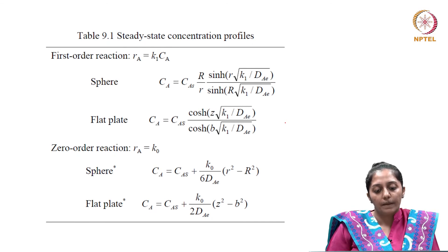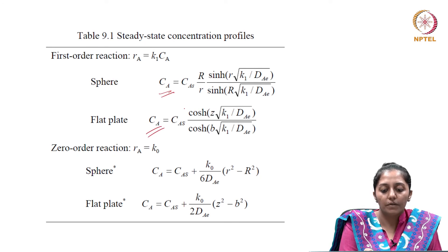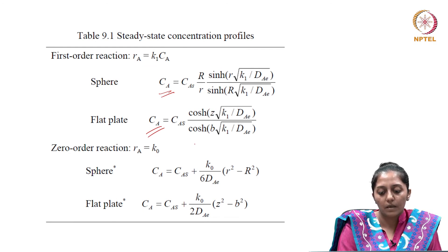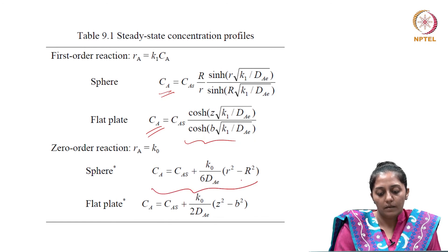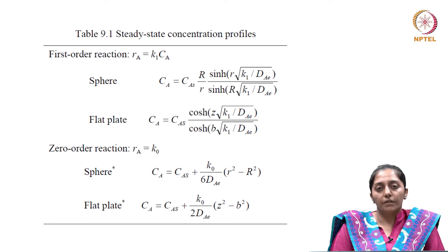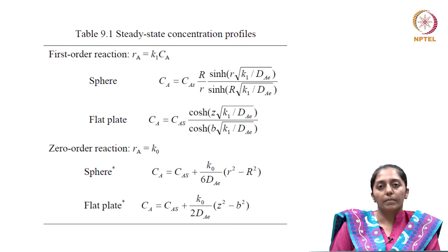A summary table shows, for first-order reaction kinetics, how the concentration profile looks with changing distance for a spherical pellet (from the surface to the inner core, defining radii as R) versus a flat plate geometry. For zero-order kinetics, the corresponding expressions are also provided. This consolidated table shows how concentration profiles change due to diffusional limitations in spherical versus flat plate geometry, for first-order and zero-order kinetics.